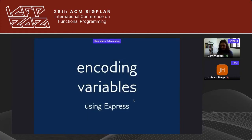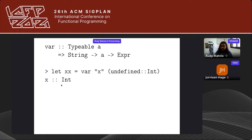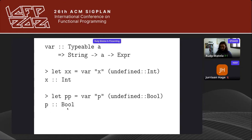Before the example applications, let's look at another feature of Express: encoding variables. We can create a variable represented as an expression using the var smart constructor. It takes a string (the variable name) and a type representative, and returns an Expr. Here's how we declare an Expr representing a variable x of type Int: var "x" (undefined :: Int). Similarly, a variable p of type Bool: var "p" (undefined :: Bool). We can use these variables inside expressions, like plus applied to x applied to one, representing x + 1 of type Int.